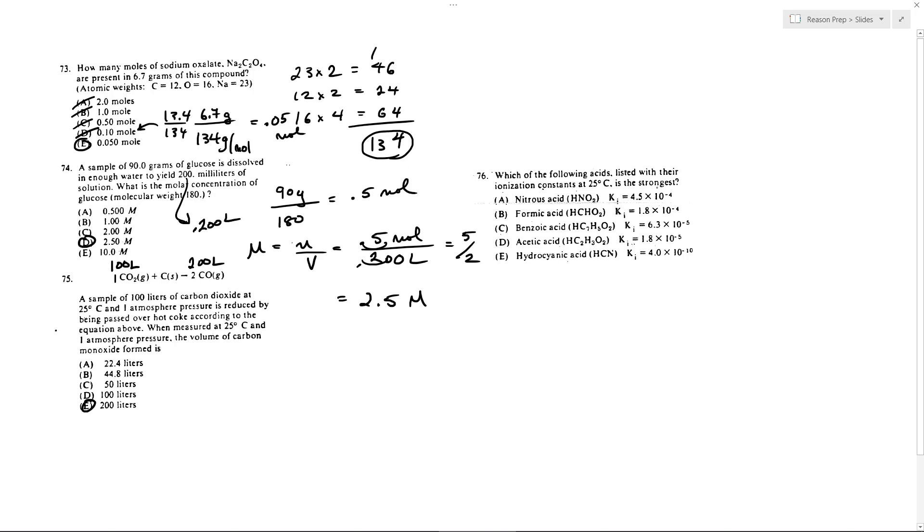Which of the following acids listed with ionization constants, these K, they're called KIs. I think, again, a more modern test, you would see those as KAs, but it's the same thing. Which is the strongest? So the one that's the strongest is the one with the biggest KA or the biggest KI.